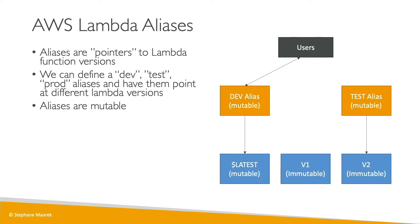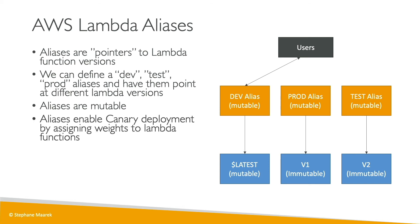We can create a test alias to test the v2 version of our function — that's mutable — and a prod alias to point to the v1 function that we know is stable and working. Aliases also enable canary deployments because we can assign weights to the Lambda function versions we point to. For prod, for example, say we want to switch from v1 to v2 — instead of switching the pointer, we can say 95% of the traffic goes to v1 and only 5% goes to v2. This lets us test v2 in production before switching 100% of the traffic there.